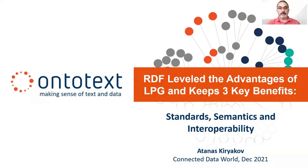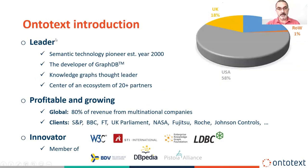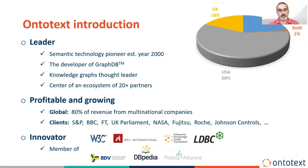Hello, my name is Atanas Kireakov and I'll provide you an overview on how RDF overtook the advantages of property graphs in recent years and what are the key benefits that it still bears for knowledge graph applications. I'm the founder of Ontotext. We started back in year 2000 as semantic web and semantic technology pioneer and now we are best known as the developer of GraphDB, one of the most popular database engines. We are an enterprise knowledge graph thought leader and we enjoy being the center of an ecosystem of more than 20 partners.